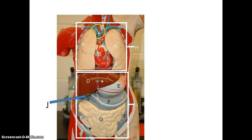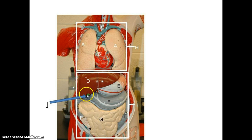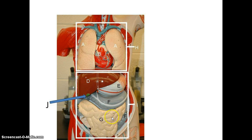So again: trachea, lungs, heart, diaphragm — everything in the box above the diaphragm is part of the thoracic cavity. Liver, gallbladder, stomach, small intestine, and the large intestine — everything below the diaphragm in here is part of the abdominal pelvic cavity.